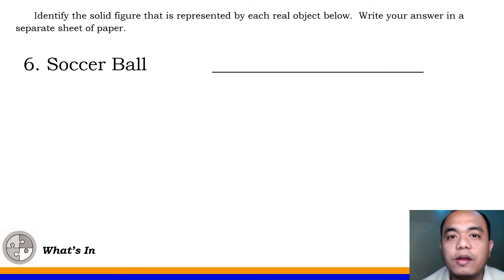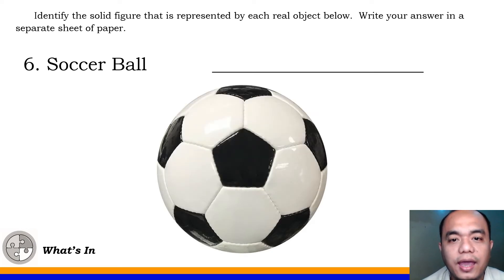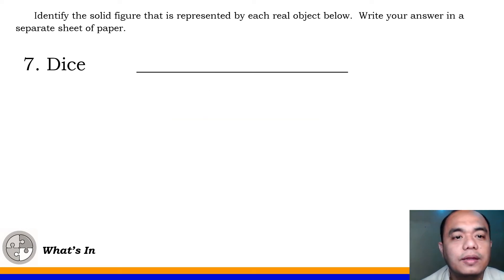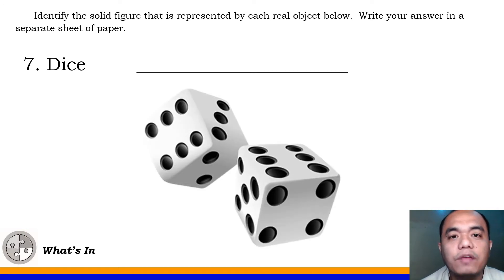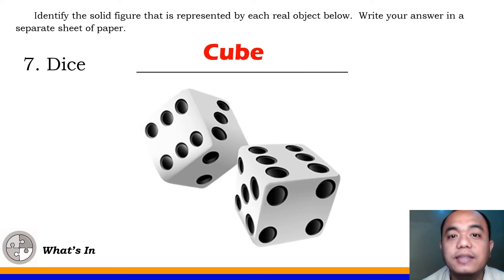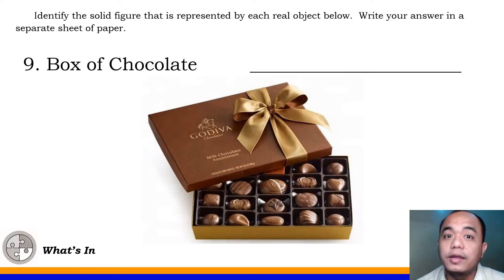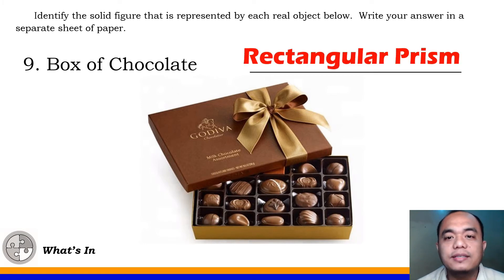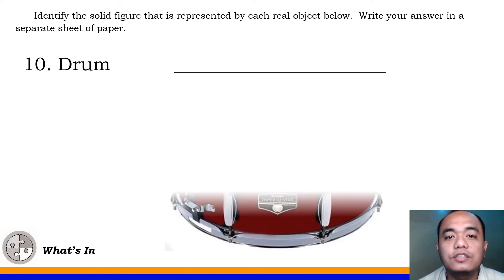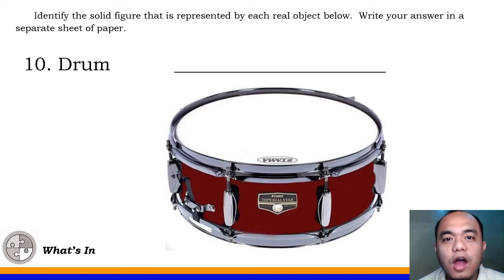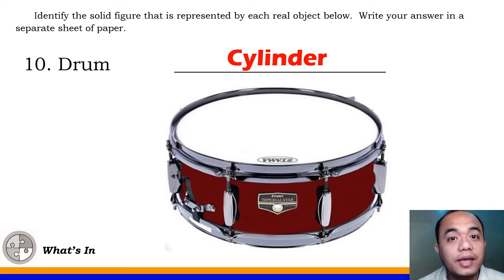Number 6, soccer ball — that's a sphere. Number 7, dice — this is a pair of dice. What figure is this? That's a cube. Number 8, globe — what figure is the globe? Globe is a sphere. Number 9, box of chocolate — what figure is the box of chocolate? This is a rectangular prism. And the last number is drum — what shape is the drum? Drum is a cylinder.